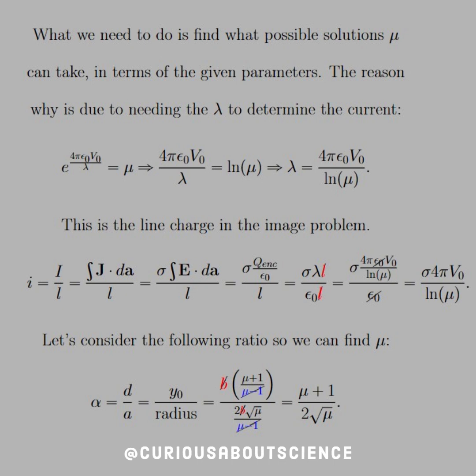And so this is the line charge in the image problem, so the current per unit length, little i, is equal to i over L, and we know that capital I is equal to j dot dA, the current density, times the surface area, and then we can morph that into conductivity times the E field with the dA, and then we know that E is just equal to Q enclosed over epsilon not, which Q enclosed here is lambda L, and we see that lambda L can simplify down because the L's will cancel, and from above, we see that lambda is equal to 4 pi epsilon not V not over LN mu. Sub that in, we see that the epsilon not cancels, and we see that we take on sigma 4 pi V not over LN mu.